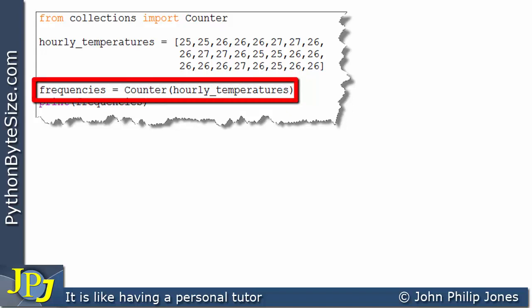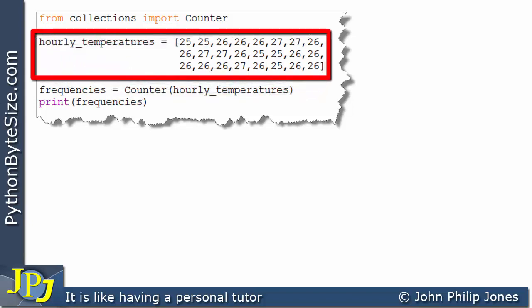If we consider this line and look here, what's happening is we're creating an instance of the Counter class, and this instance will take in here the hourly_temperatures, in other words the list that was created on this line.